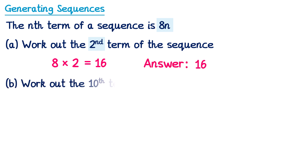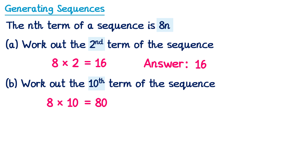For part b of the question it says to work out the tenth term of the sequence. So we've still got the same nth term 8n, but we want the tenth term this time. So we'll substitute n for 10: 8 lots of 10, which is 80. So the answer is 80.